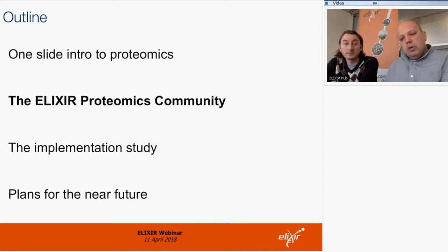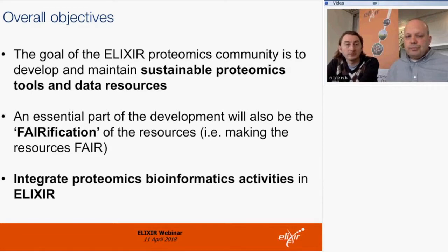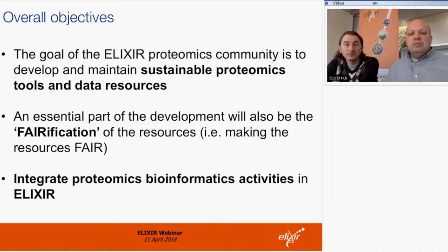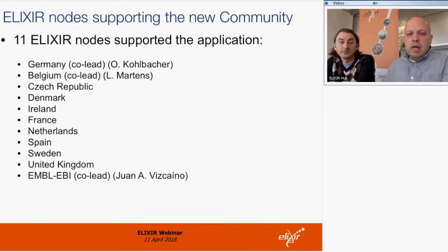The ELIXIR proteomics community was approved in September last year. We are one of the new communities together with metabolomics and Galaxy. The main goal of the community is to develop and maintain sustainable proteomics tools and data resources. An essential part of this is verification of resources and making all resources FAIR. Importantly, the goal was also to integrate proteomics bioinformatics activities within ELIXIR, given the exclusive information that can be covered through proteomics.